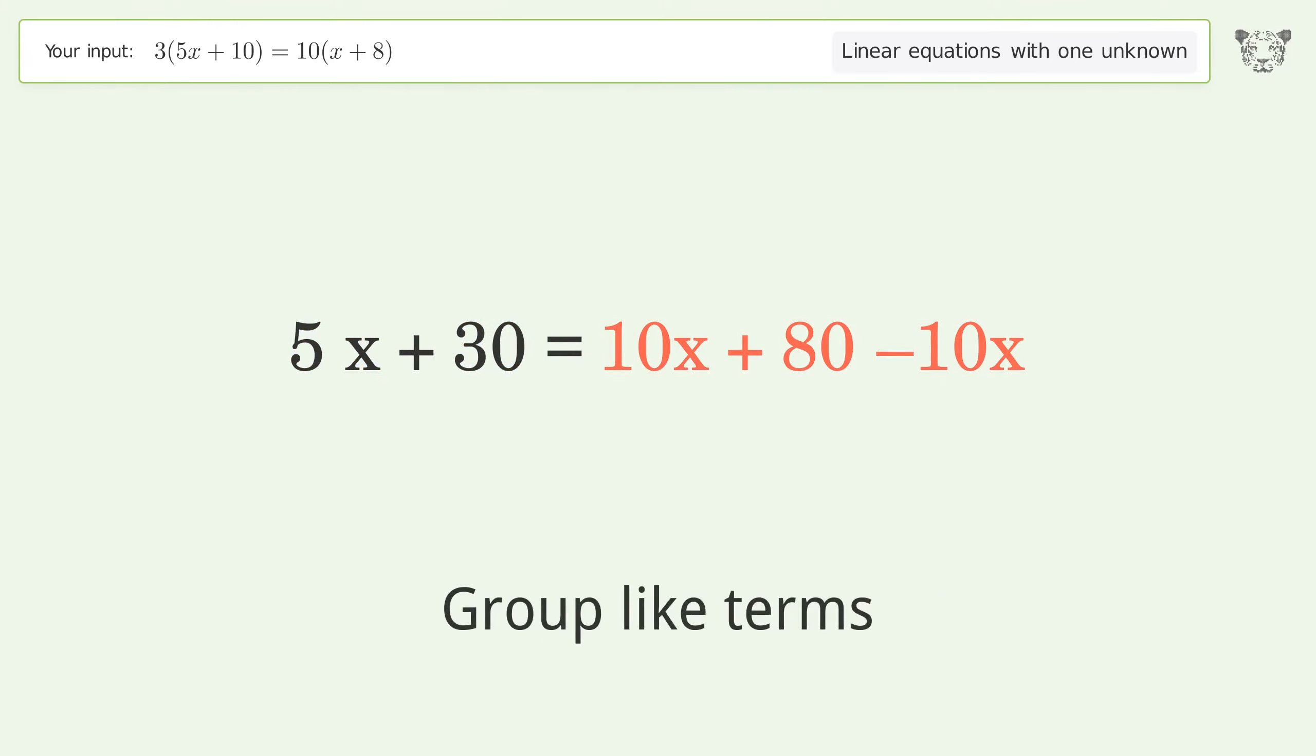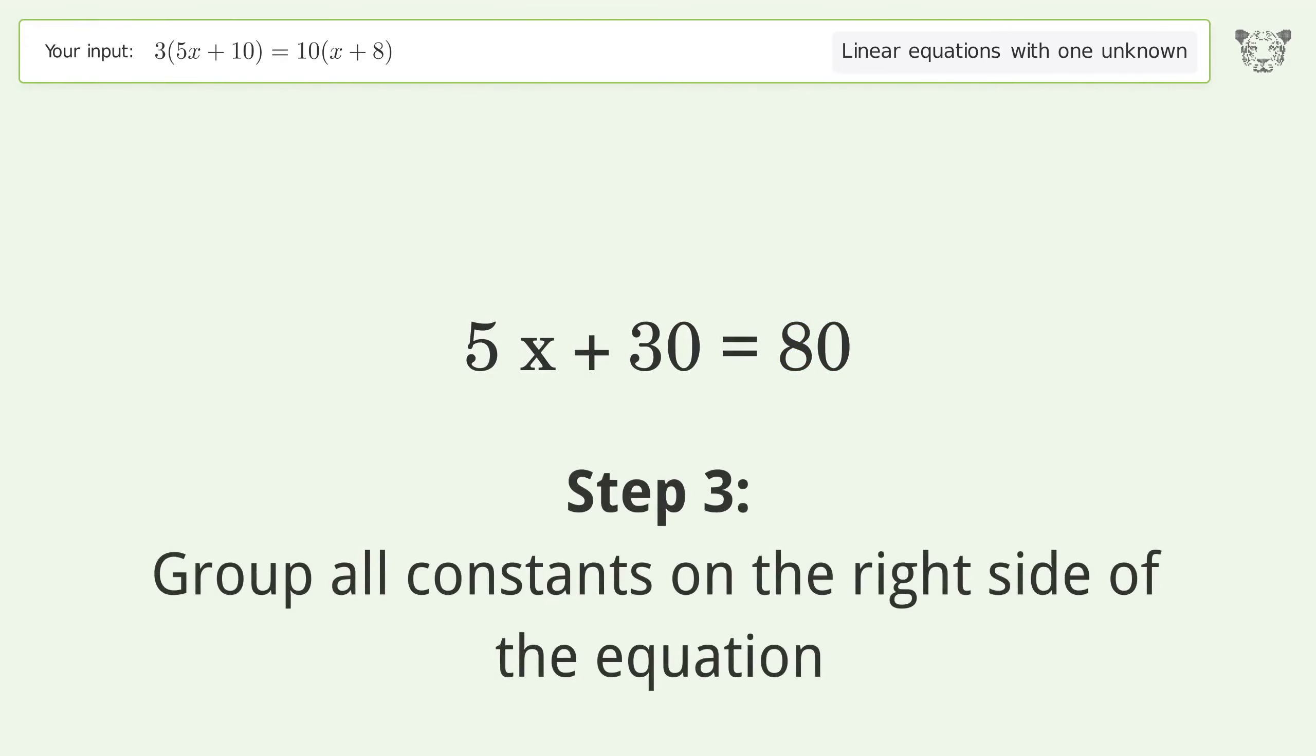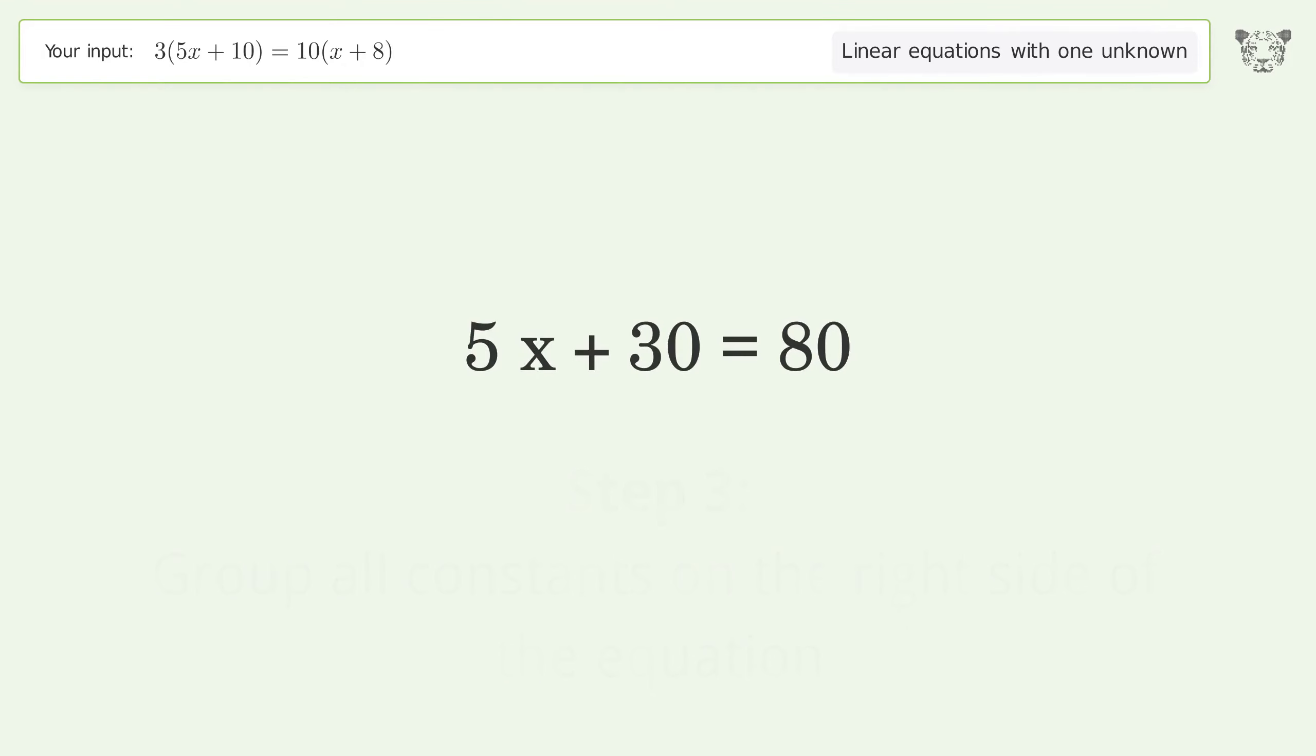Group like terms and simplify the arithmetic. Group all constants on the right side of the equation. Subtract 30 from both sides and simplify the arithmetic.